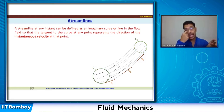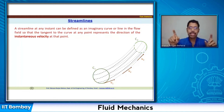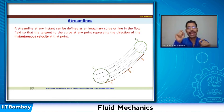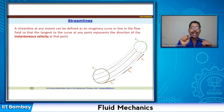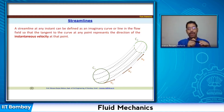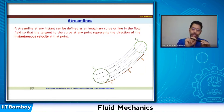You have a flow field and within that you imagine there is a line. The property of this streamline is that the tangent to this curve at any point gives the direction of the instantaneous velocity at that point.